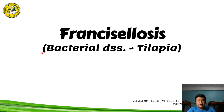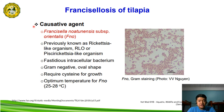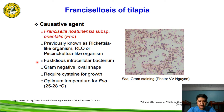The next disease is francisellosis. The causative agent in tilapia is Francisella noatonensis subspecies orientalis, or FNO, previously known as rickettsia-like organism (RLO) or PCR rickettsia-like organism. This is a fastidious intracellular, gram-negative bacterium exhibiting an oval shape.